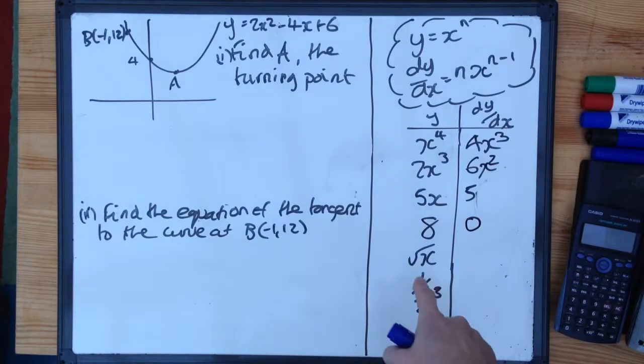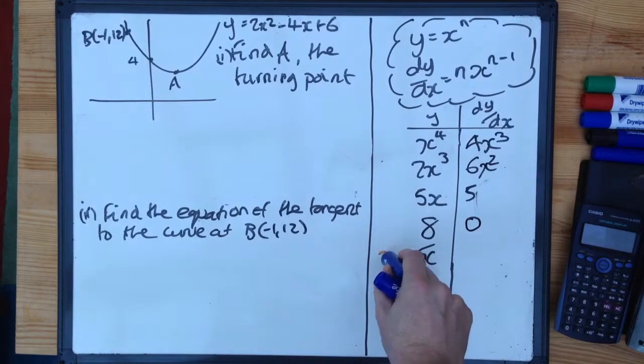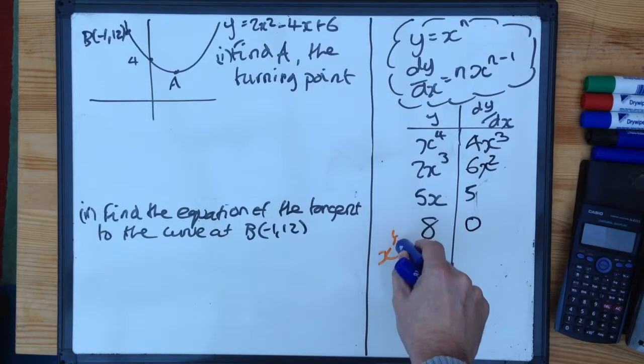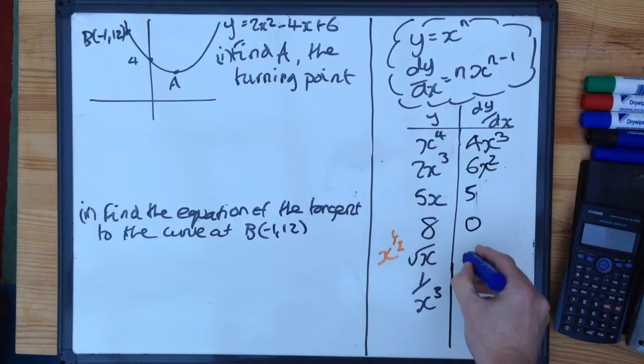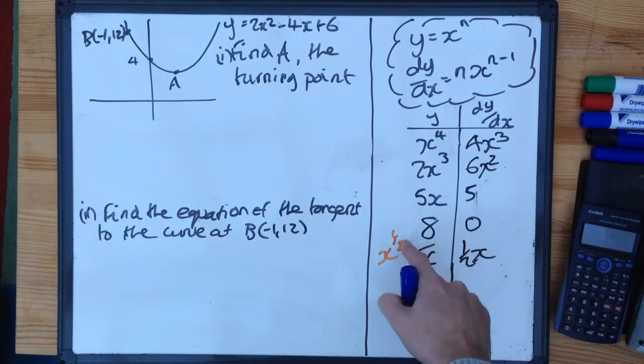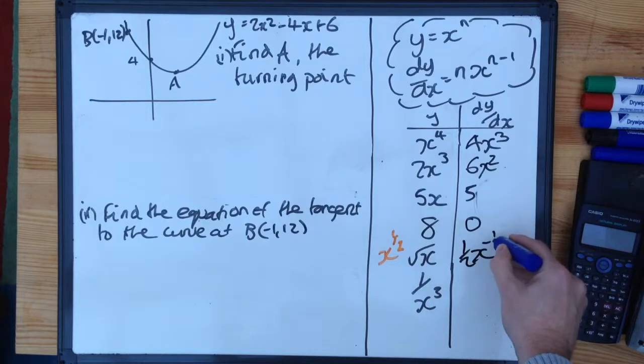To differentiate something like square root of x, again, we need to rewrite it, remembering that square root is to the power of 1 half. So we've got the power is 1 half, so we do 1 half x, take 1 off the power, 1 off 1 half, minus 1 half.